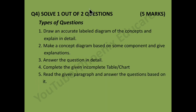Question number 4 will have 2 questions, you need to solve 1, and it will be for 5 marks — this is the last question. Types: first is draw an accurate labelled diagram of a concept and explain in detail — along with the explanation, aapko diagram bhi banana hoga. Diagram separately banao, uske neeche se explanation start karo. Diagram pencil se banana chahiye, labelling correct aur neat honi chahiye. Second type is make a concept diagram based on some component and give explanation — concept chart, jaise history ya geography mein dekha hoga.